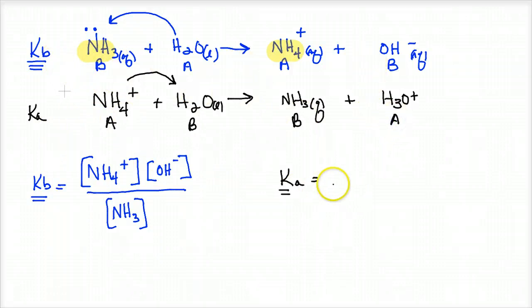So it would go products—you go ammonia times the hydronium ion, same thing as the proton, over the NH4+. Interesting enough, let me get rid of some stuff here.